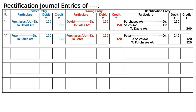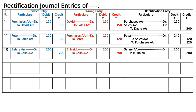Case (c): Rs. 200 salary paid to cashier B. Naidu stands wrongly debited to his personal account. The correct entry is: salary account debited to cash account, being salary paid to the employee B. Naidu. The wrong entry is B. Naidu debited to cash account. By mistake, in place of salary account, B. Naidu's personal account was written. So salary will come and B. Naidu will go: salary debited 200, to B. Naidu credited — to cancel that debit effect.